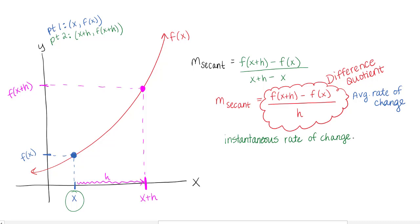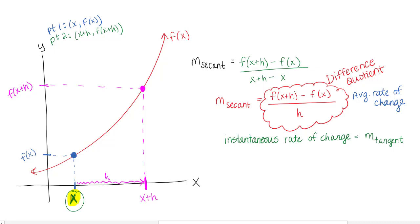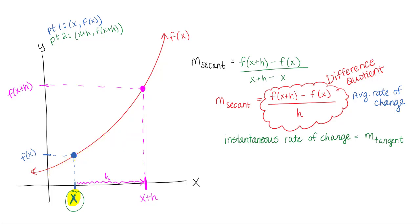Instantaneous rate of change is still a rate of change — it's still a slope. But instead of being the slope of the secant line, this is now going to be the slope of a tangent line, because it's my slope at one moment in time. So I want to determine graphically what is the slope of my tangent line at x. My tangent line touches my curve one time and takes the shape of my curve.